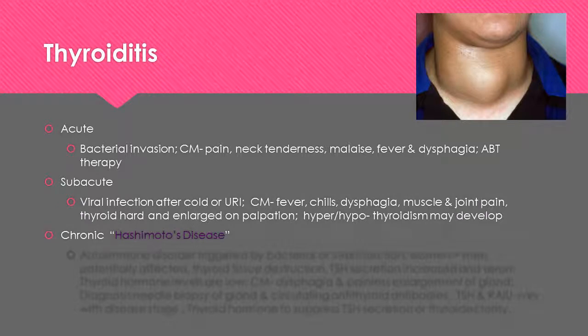Subacute thyroiditis is generally due to a viral infection after a cold or an upper respiratory infection. Clinical manifestations are fever, chills, dysphagia, muscle and joint pain, a hard and enlarged thyroid on palpation, and the patient could develop hyper- or hypothyroidism.